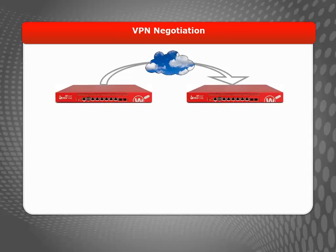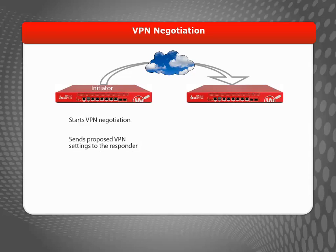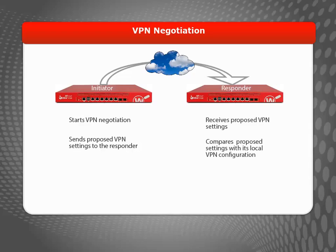After you configure a VPN, the endpoint that first needs to route traffic through the tunnel starts VPN negotiations. During VPN negotiations, one gateway endpoint — the initiator — sends proposed VPN settings to the other VPN endpoint. The other gateway endpoint is the responder. The responder receives the proposed settings, compares them to locally configured settings, and accepts or rejects the proposed settings. When troubleshooting a VPN tunnel, it is most useful to look at the VPN status on the responder.